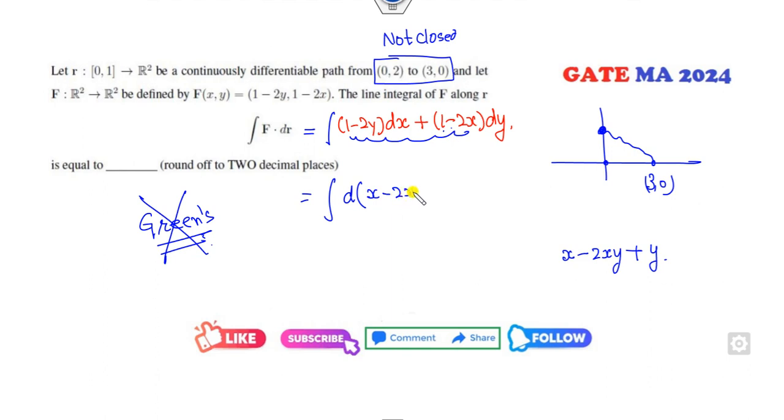Now if I call this is my a from this to this, a to b. If you open this bracket, you can see this is the same thing: x plus y minus 2xy from a to b.